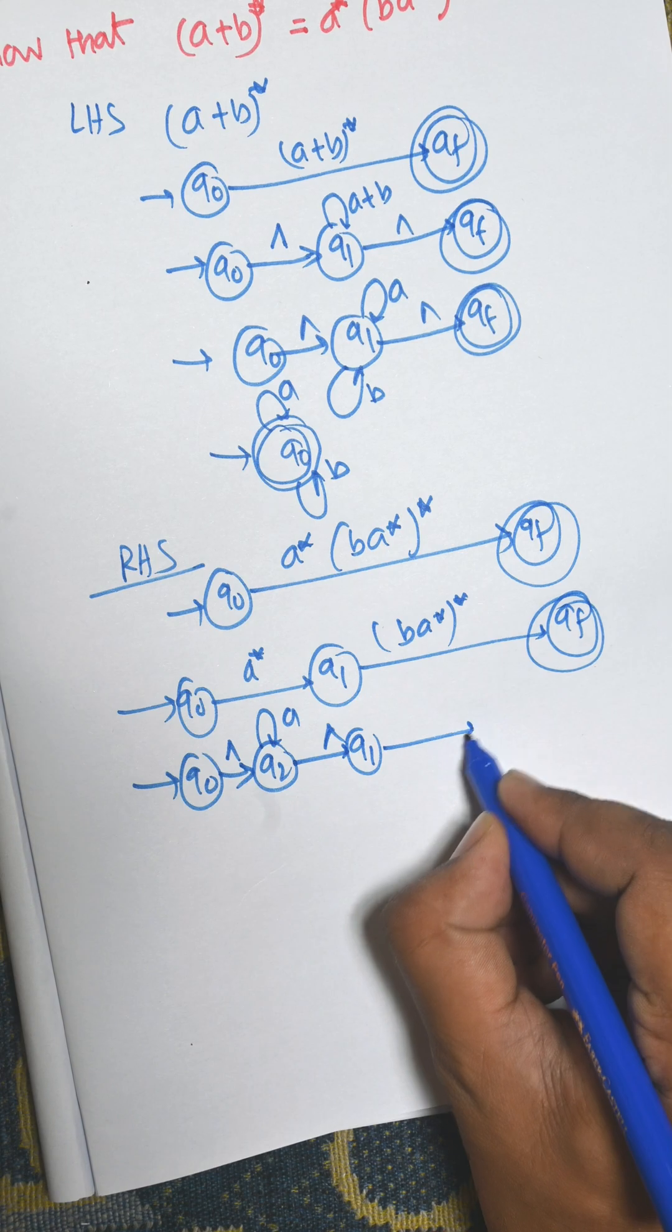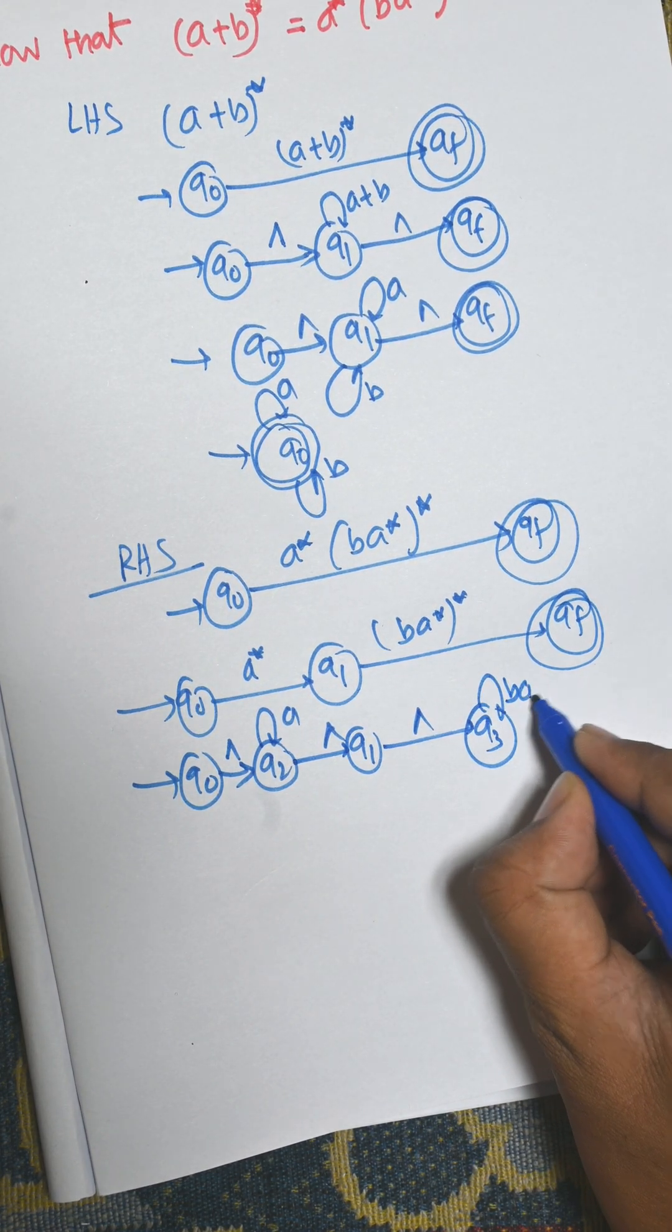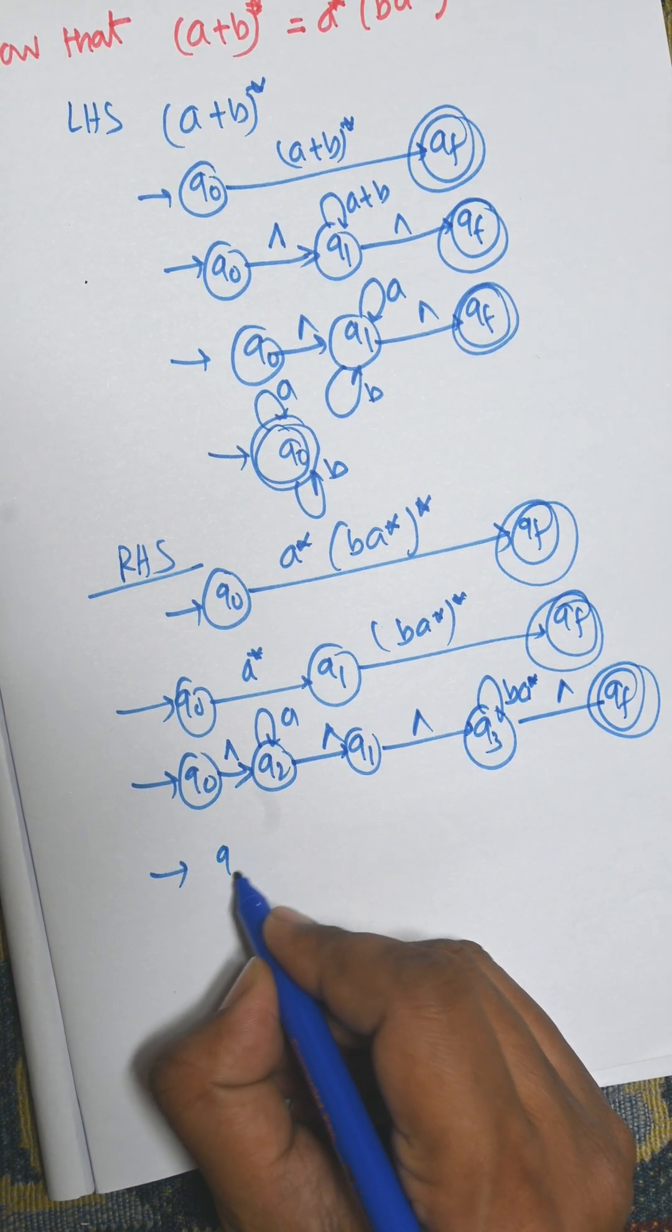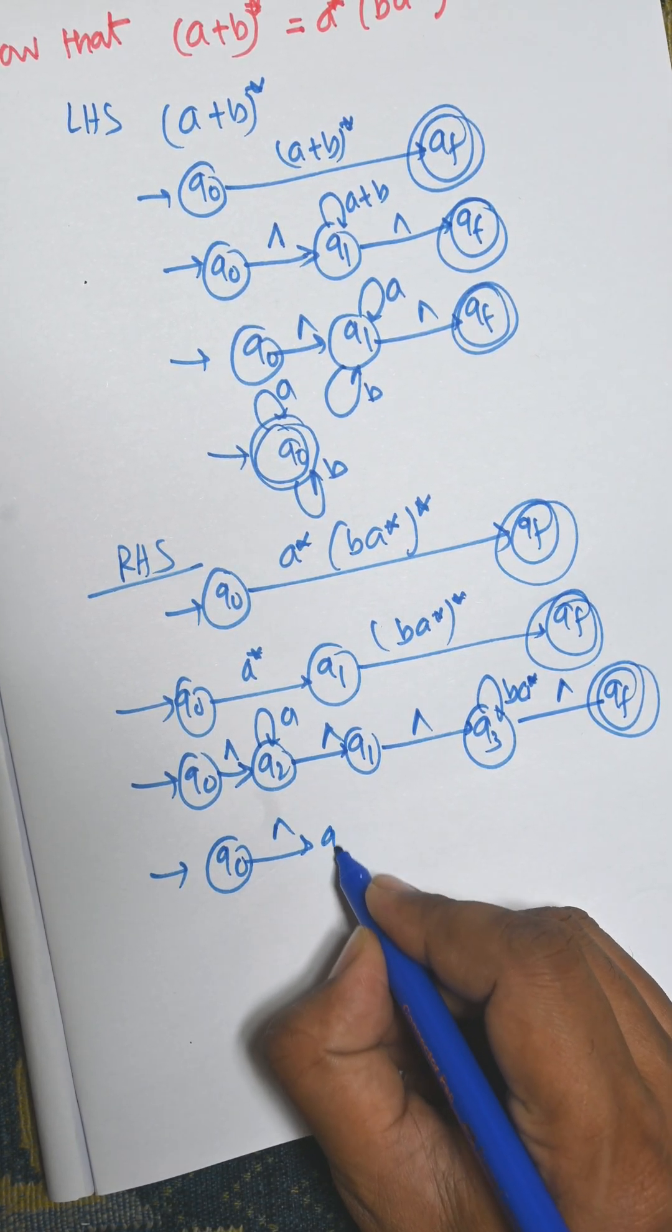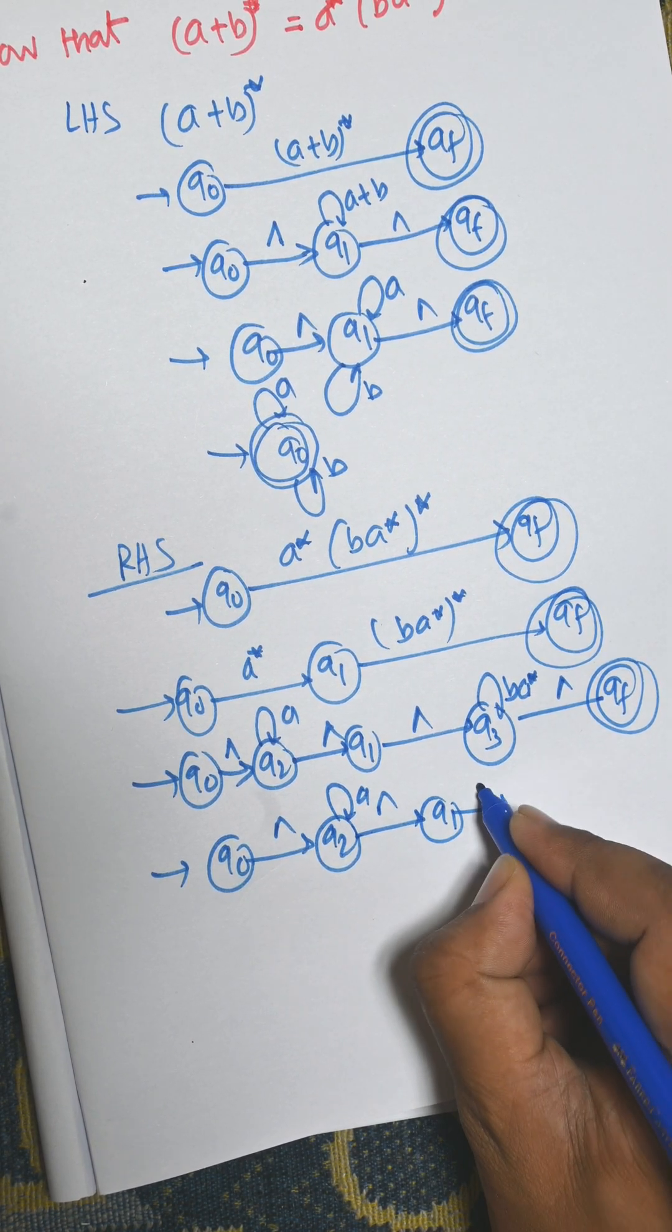For here there is an empty symbol q3. For q3 there is a b* and from q3 it goes to qf. Now this is q0 empty q2 a and q1 empty q3.